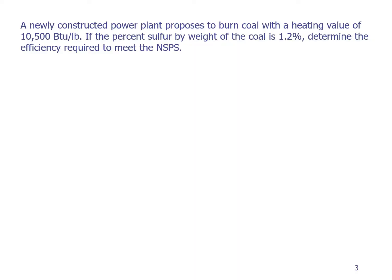So let's look at this example problem. A newly constructed power plant proposes to burn coal with a heating value of 10,500 BTUs per pound. If the percent sulfur by weight of the coal is 1.2 percent, determine the efficiency required to meet the new source performance standards. So what we need to do is first find the uncontrolled emission rate of SO2. This is the UER, and it will be in units of pounds per million BTU, because then we can go look up in a different table what the required control is.